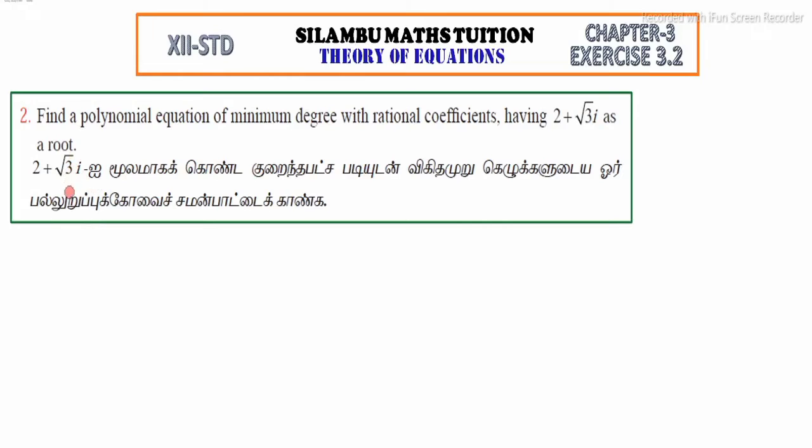Hi students, this is Silambu Maths Tuition, 12th standard Exercise 3.2, Question 2. Find a polynomial equation of minimum degree with rational coefficients having 2 plus root 3i as a root.